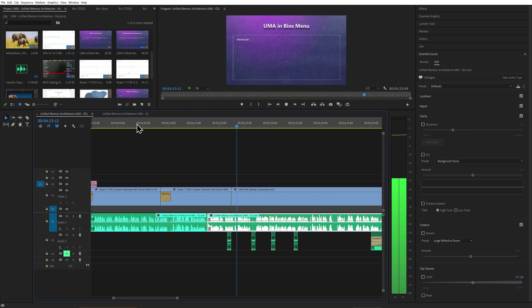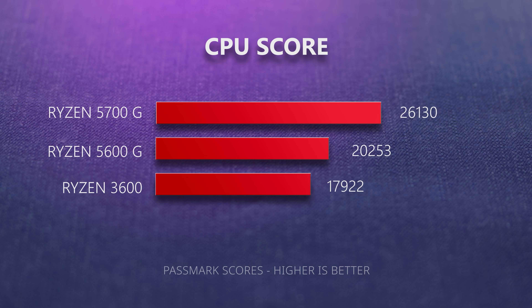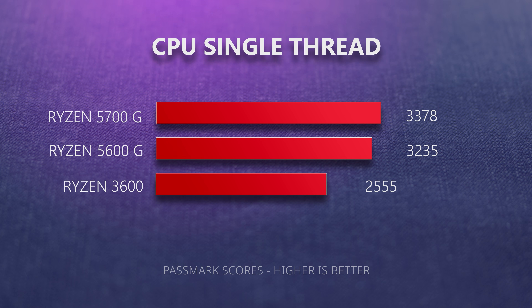Starting with the CPU benchmarks, both CPUs showed very impressive multi-core performance, with the 16 cores of the Ryzen 5700G strongly outperforming the 12 cores of the 5600G. I was really impressed by the multi-core performance of the 5700G. In single-thread performance, which is so important for graphics performance, both processors are top-tier performers, though not quite in the league of the Apple M1 chip. Both CPUs are strong recommendations for graphic processing workflows.